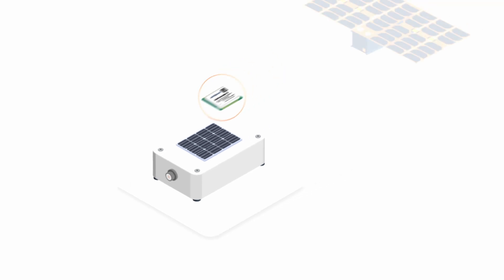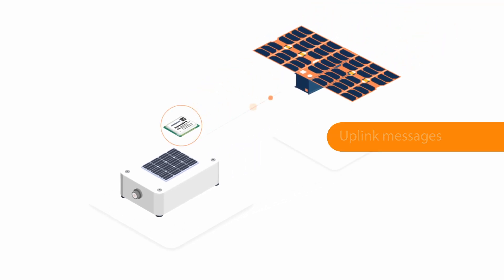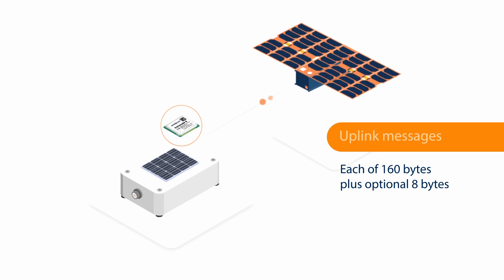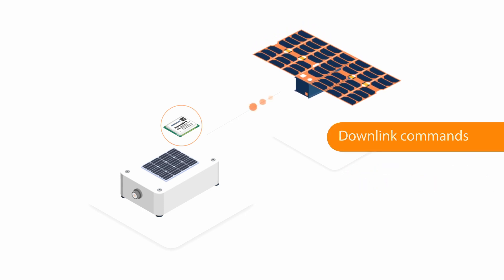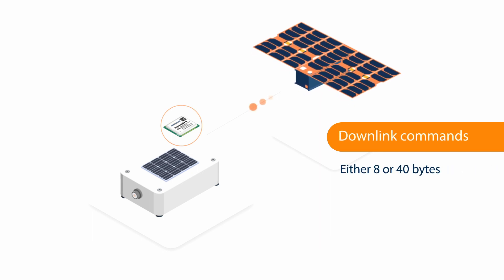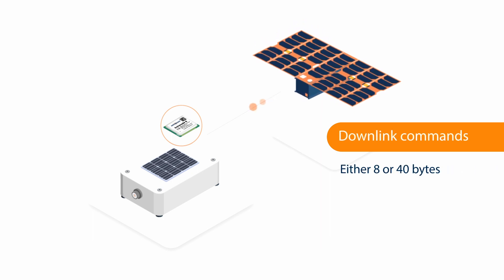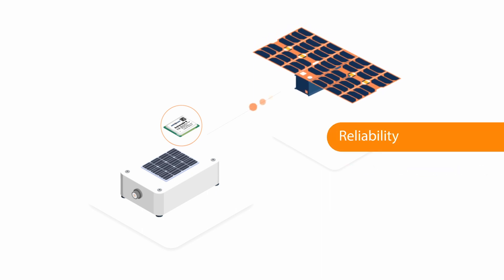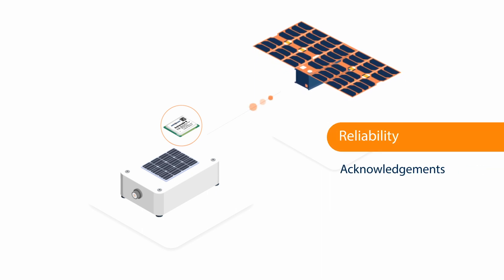You could send uplink messages from your asset to satellite up to 160 bytes per message, or receive downlink commands from the satellite that you sent from your backend. These downlink commands could either be 8 bytes or 40 bytes. Reliability of data transfer is ensured by acknowledgements that you receive from the satellite for every successful message transfer, so you need not send the same message multiple times just to be sure and increase your overall data consumption. Security is ensured by using industry-standard encryption of 256-bit AES.